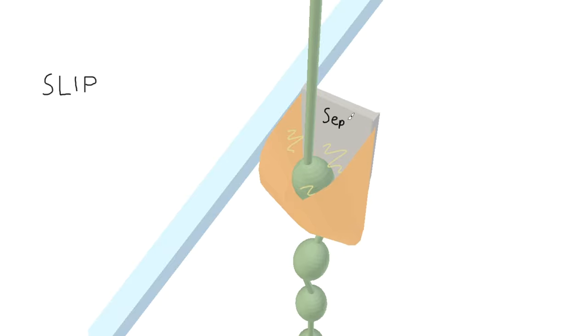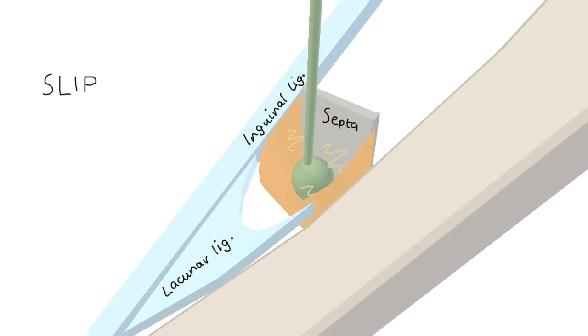Lateral we've got the medial septa of the femoral sheath. Medial we have the lacunar ligament, anterior the inguinal ligament and posterior lying flush with the pubic bone, we have the pectineal ligament.